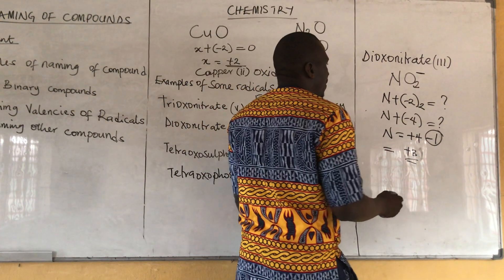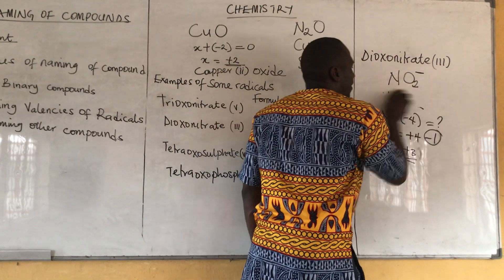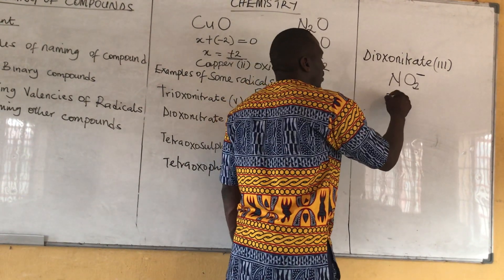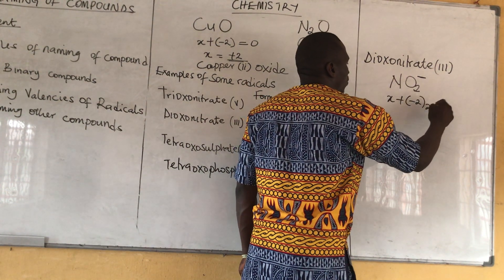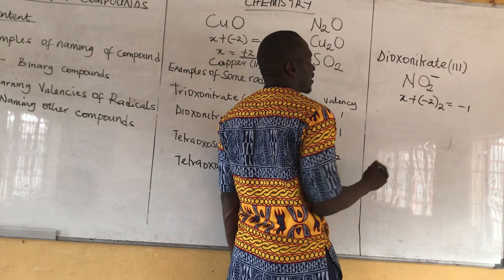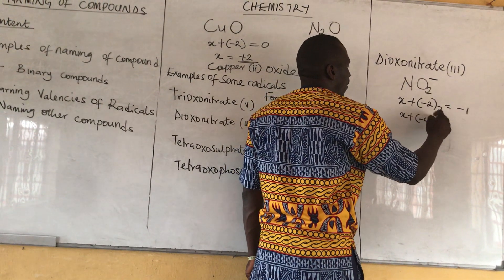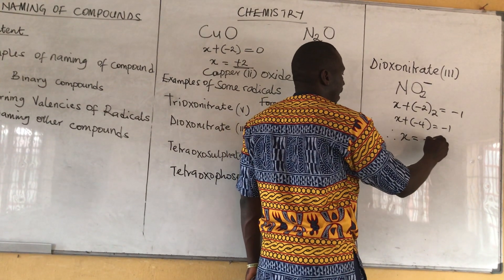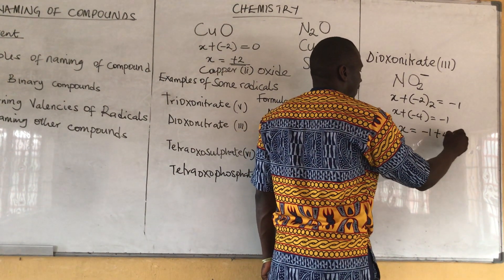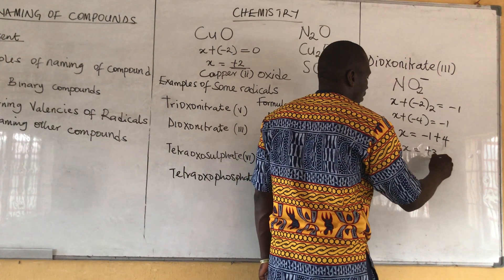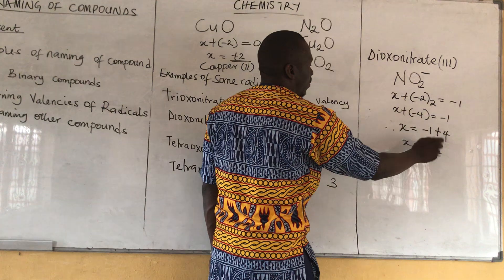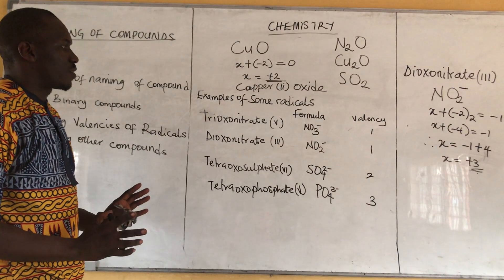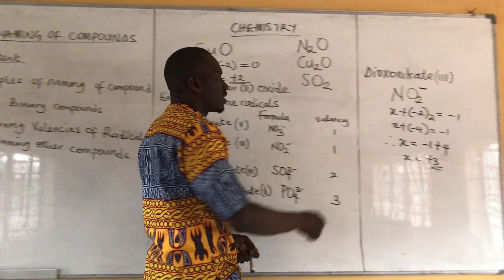Let's verify: putting the charge of minus 1 back into the equation — X plus (minus 2 times 2) equals minus 1. So X plus minus 4 equals minus 1. Making X the subject: X equals minus 1 plus 4, which equals plus 3. Dioxonitrate(3) tells us the oxidation state of nitrogen is 3 — confirmed. The valency is therefore 1.